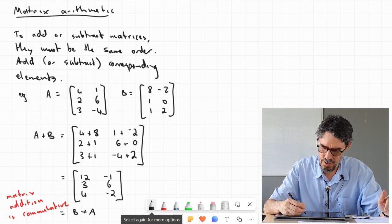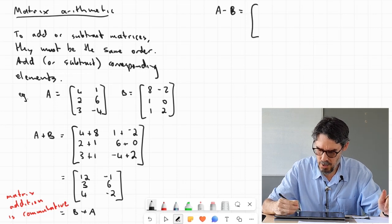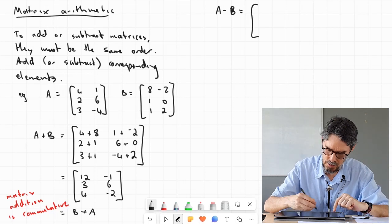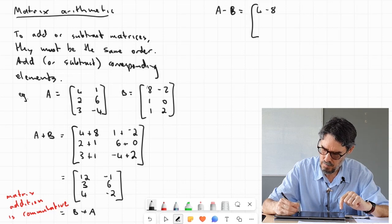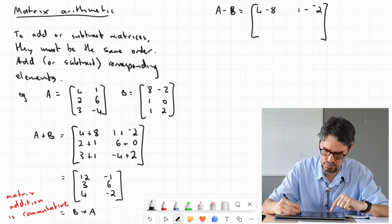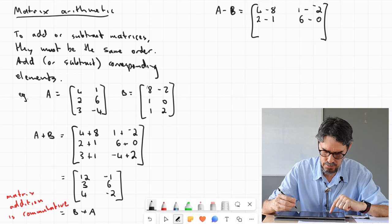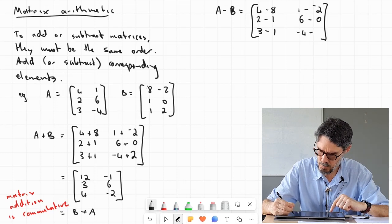Subtraction works the same way. A minus B. Again, I'll write an extra line even though later you might not have to. It's going to be 4 minus 8, 1 minus negative 2. Notice I'm being careful with those negative signs. 2 take 1, 6 take 0, 3 take 1, negative 4 take 2.